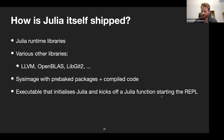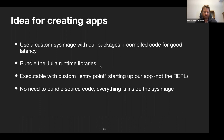What's interesting is we can replace that executable — instead of starting a REPL, we put in our own executable that starts our own Julia code. That's a hint of how this works. The idea for creating an app: use a custom sysimage with our own packages compiled for good latency (like in part two), bundle the Julia runtime libraries, and create an executable with a custom entry point that starts our app instead of the REPL.